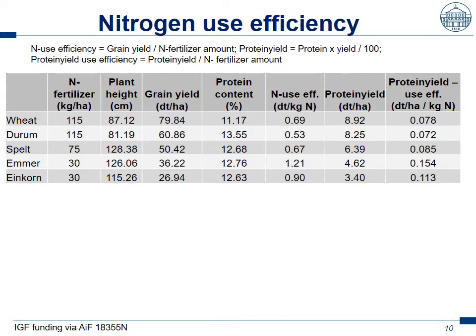Having a look at nitrogen use efficiency. In the same trial, once again wheat, durum, spelt, emmer, and einkorn. We see here the amount of nitrogen fertilizer applied. We had about 60 kg of N-min in the soil, then we added for wheat and durum 115 kg of nitrogen fertilizer, for spelt only 75 kg, and for emmer and einkorn only 30 kg — mainly due to the fact that emmer and einkorn get so tall and have a high risk of lodging, so too much fertilizer leads to even taller plants that lodge more. In plant height: wheat and durum were about 80–87 cm tall, while spelt, emmer, and einkorn were above 115 cm tall. Thus spelt, emmer, and einkorn have the potential to build a lot more straw than bread wheat.